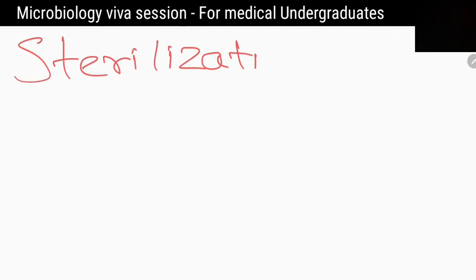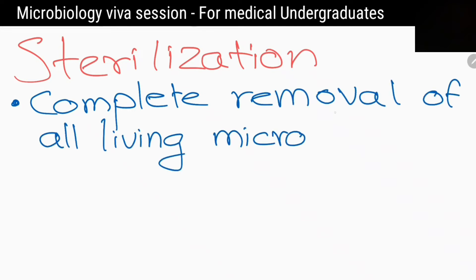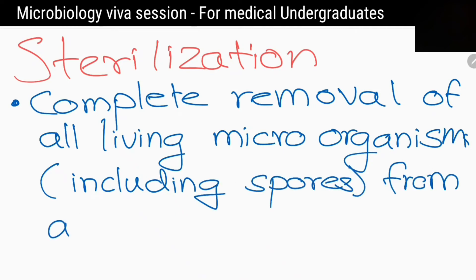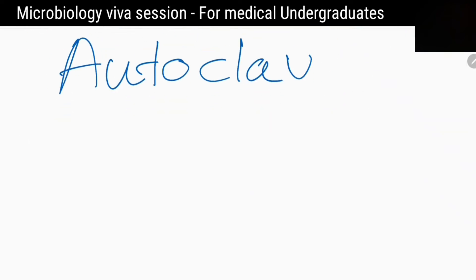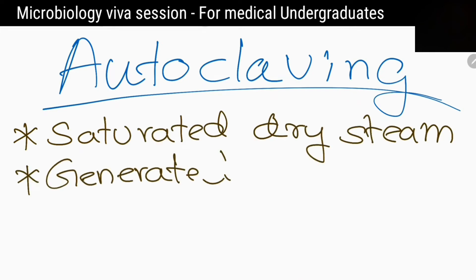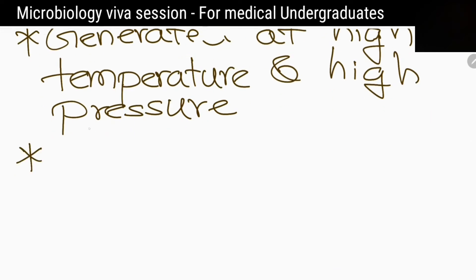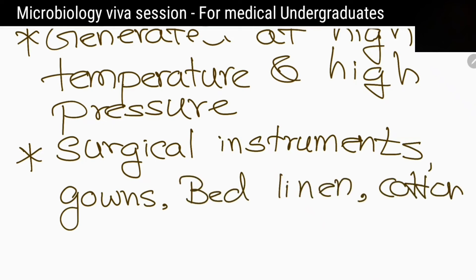What is the most effective method of sterilization used in a healthcare setting? Autoclaving. It uses saturated dry steam generated at high pressure and temperature, for sterilizing surgical equipment, gown, bed linen, and cotton.